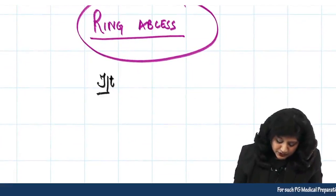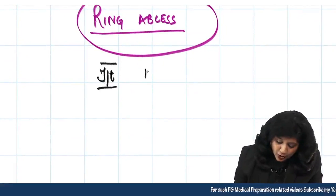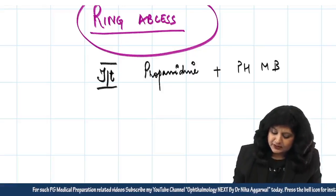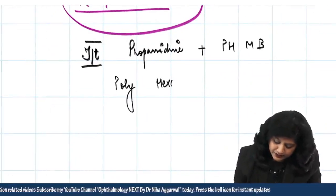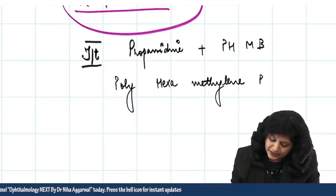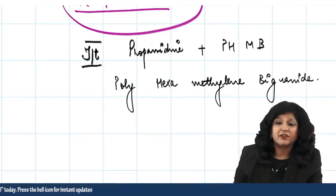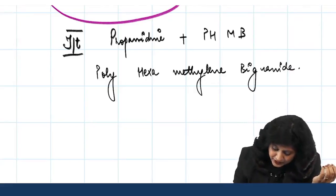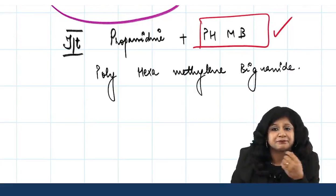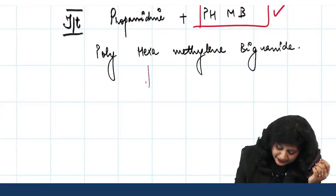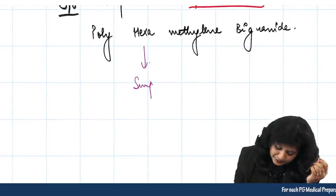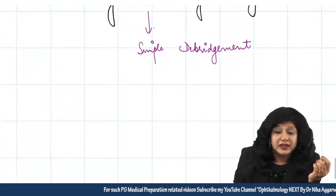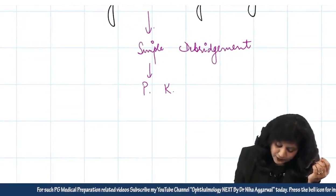Regarding treatment, we usually give a combination of propamidine along with PHMB — polyhexamethylene biguanide. If you must choose one agent, go with polyhexamethylene biguanide. If medical management fails, you can proceed to simple debridement to remove debris. If debridement also fails, the next step is penetrating keratoplasty, or corneal transplantation.